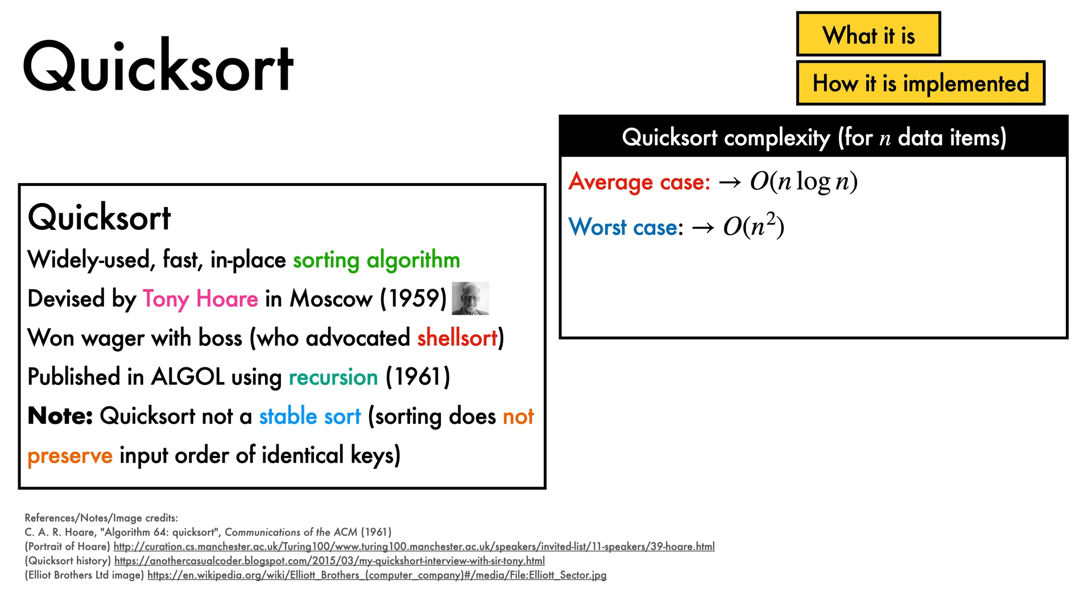We require linear storage for the original container of n items to be sorted, and the storage overhead of Quicksort itself is big O of log n in the average case, and linear in the worst case.